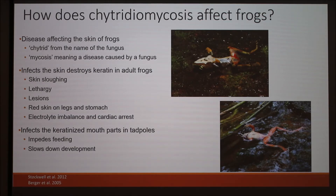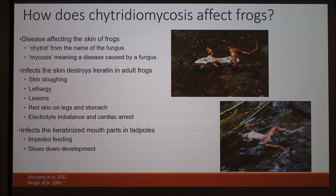In adult frogs, the fungus gets under the skin and destroys the keratin there, and this causes skin sloughing — they just shed their skin — as well as lethargy, lesions, and red skin. You can see in these two pictures here these frogs have unfortunately died, and you can see on the legs and arms the skin is red. Eventually this causes an electrolyte imbalance, which leads to cardiac arrest and death.